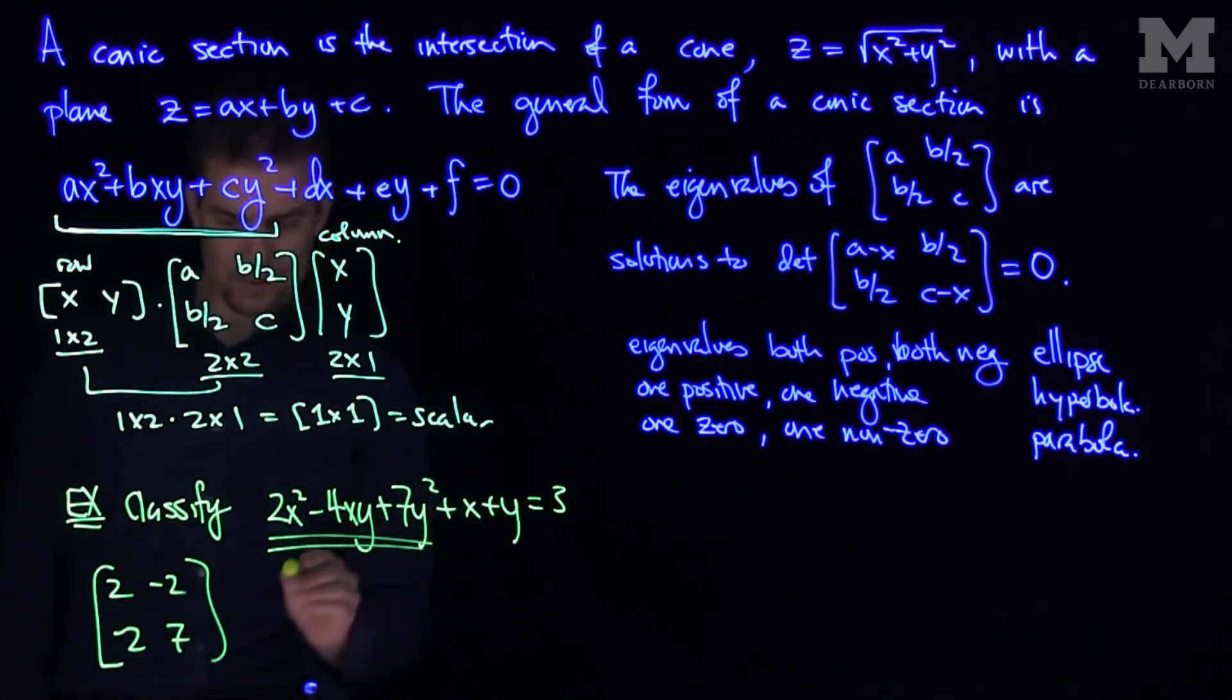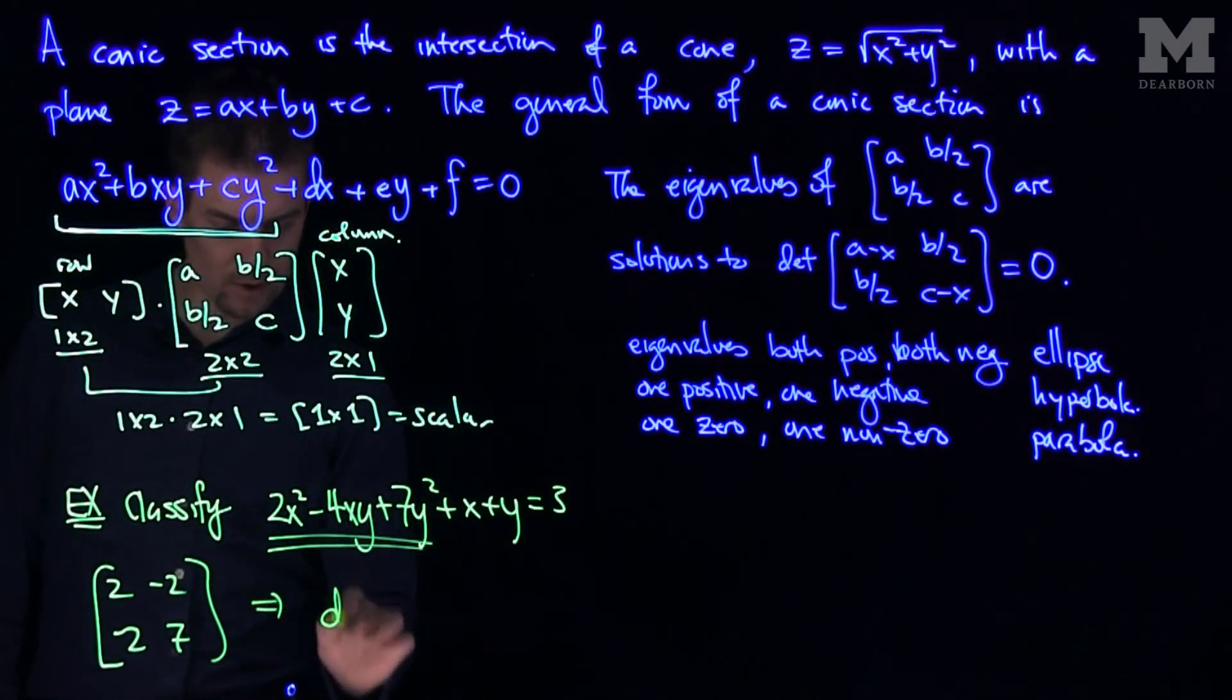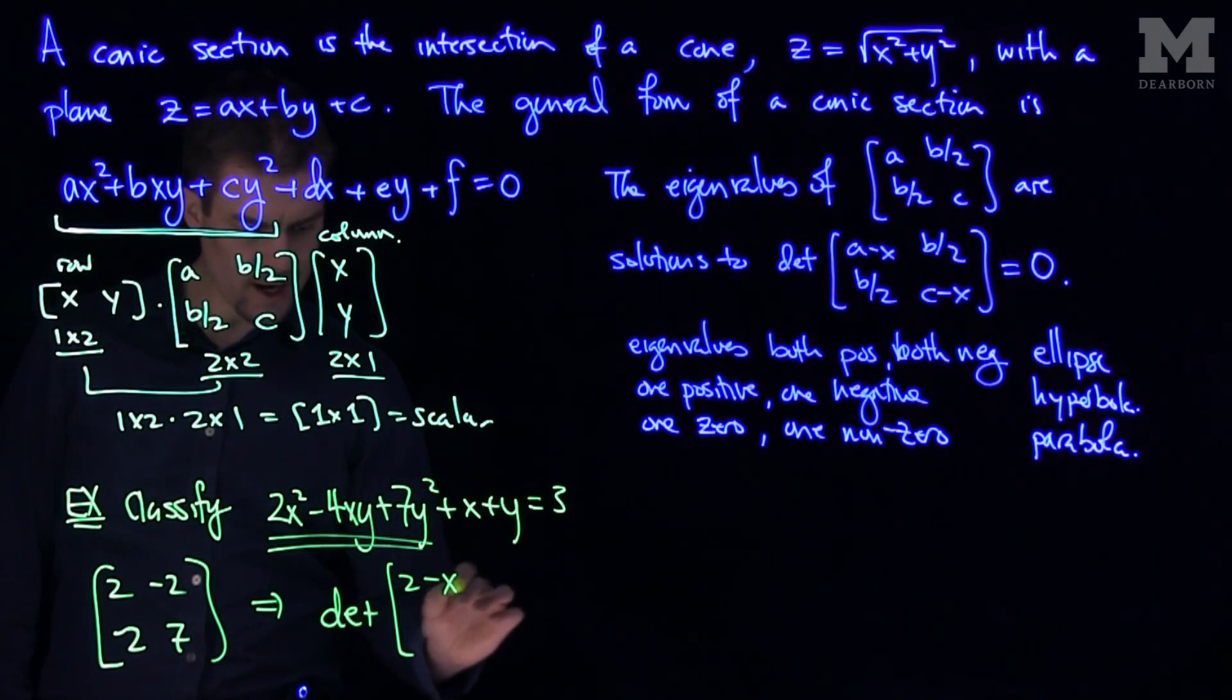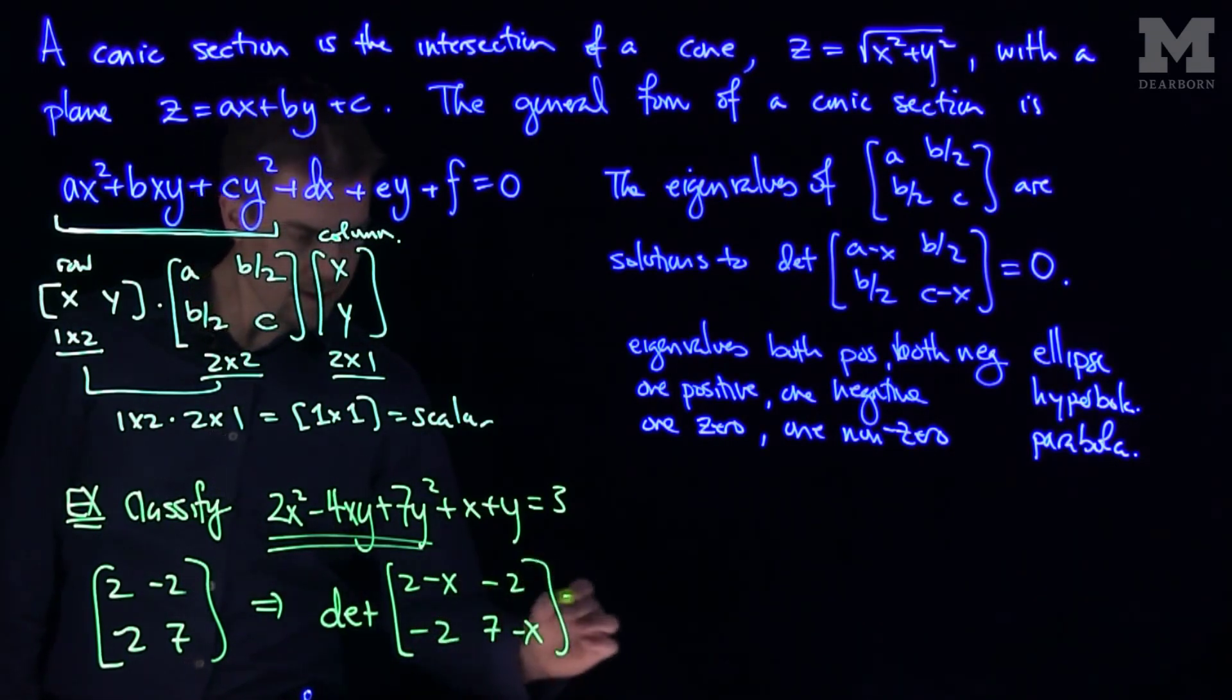So let's find the eigenvalues of this matrix. We find the eigenvalues by computing the determinant of 2 minus x, negative 2, negative 2, and 7 minus x, and set that equal to zero.